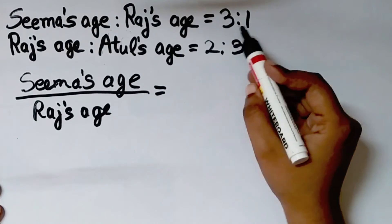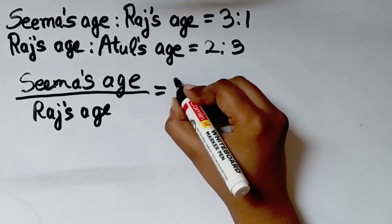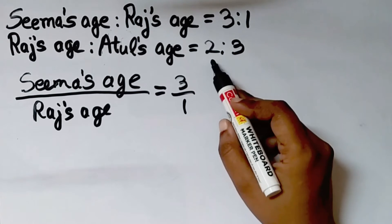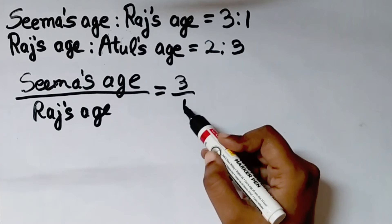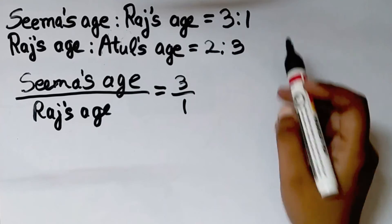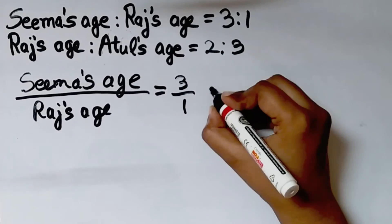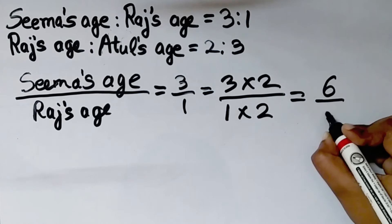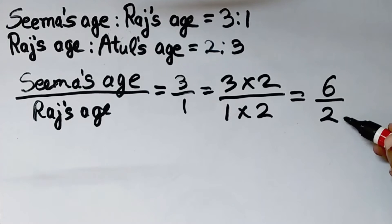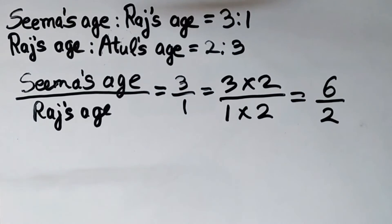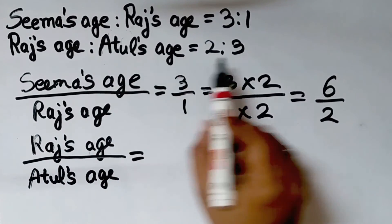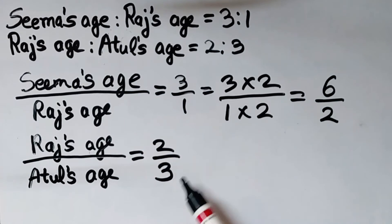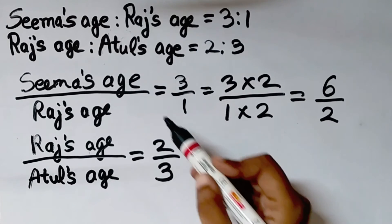We write the ratio in fraction form. Sima's age upon Raj's age is 3 upon 1. We need Raj's value to become 2, so we multiply both numerator and denominator by 2. That gives 3 into 2 upon 1 into 2, which equals 6 upon 2. So the ratio of Sima to Raj becomes 6 is to 2. Now Raj's age to Atul's age is 2 is to 3. The second term of the first ratio is now the same as the first term of the second ratio, so we can write it in ratio of 3 terms.